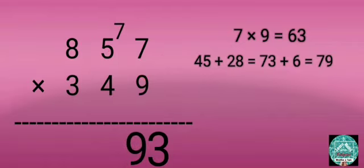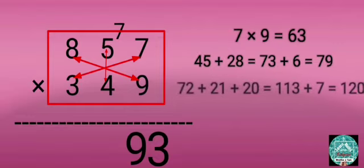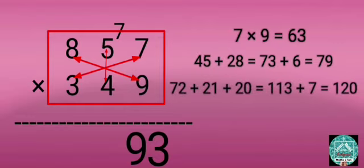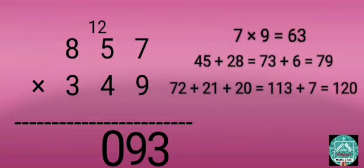Step 3: Multiply 8 by 9, 3 by 7, and 5 by 4, then add: 72 plus 21 plus 20 equals 113. Then add 113 and 7 that's carried forward: 113 plus 7 equals 120. Write 0 before 9 and carry forward 12.